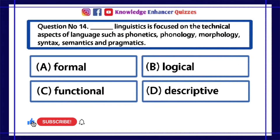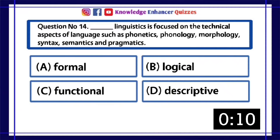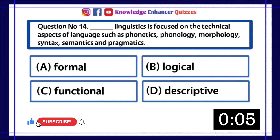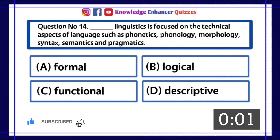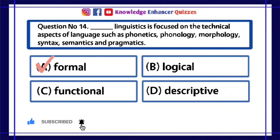Question Number 14: Dash linguistics is focused on the technical aspects of language such as phonetics, phonology, morphology, syntax, semantics, and pragmatics. A. Formal, B. Logical, C. Functional, D. Descriptive. Option A is the right answer.